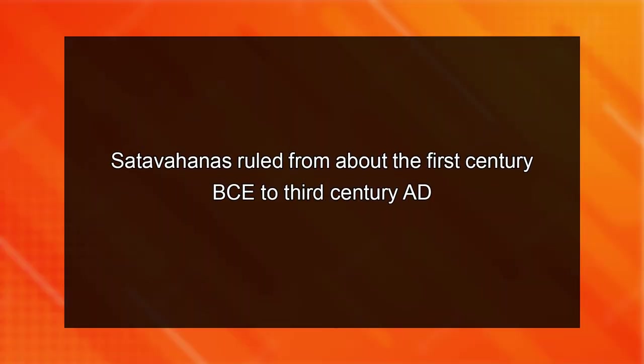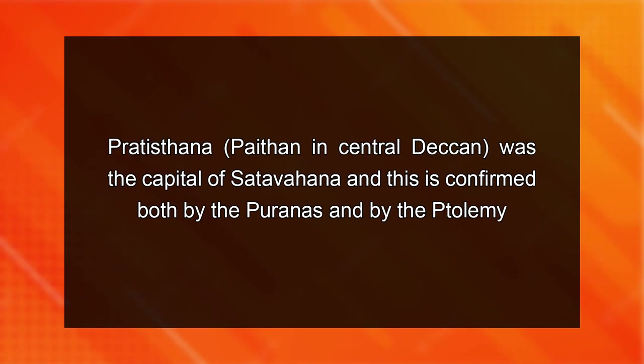Scholars mention that the rule of 15 kings seems logical as far as the years are concerned, as against the years mentioned in the Puranas. Thus, we can say that the Satavahanas ruled from about 1st century BCE to 3rd century CE. The Satavahana inscriptions are found at Nasik and Naneghat in the western Deccan. We also find numismatic evidences of Satavahanas from the archaeological sites of Nevasa in Ahmednagar district, Maharashtra, suggesting that they also controlled the central Deccan. Pratishthana or Paithan in central Deccan was the capital of Satavahanas, confirmed both by the Puranas and by Ptolemy.